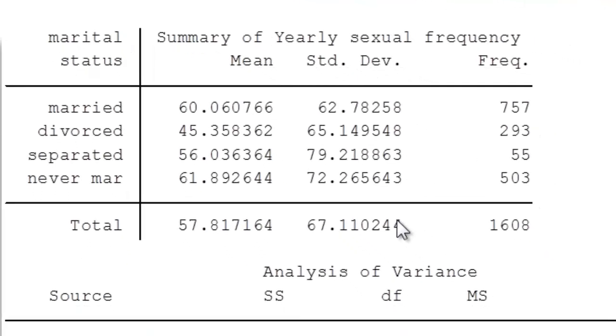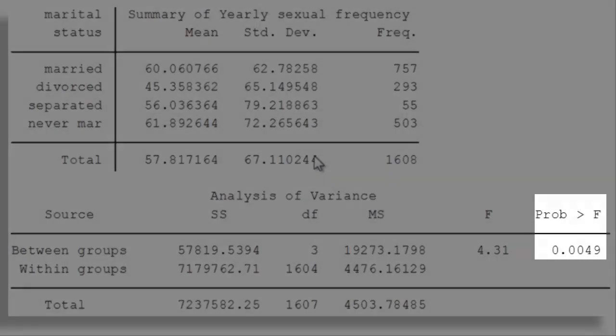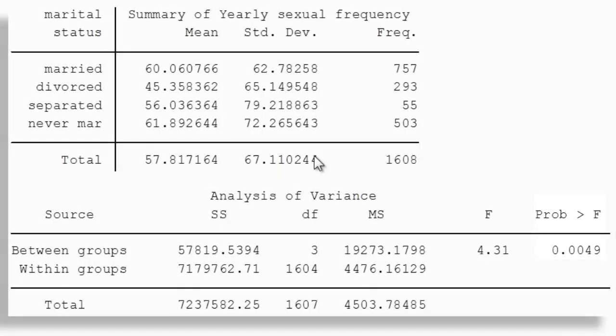The guts of the problem lies down below. You can see that there's a lot of numbers in this table. This is called an ANOVA table, and there's a lot of numbers in it. The number that's really most important initially is that one labeled probability PROB greater than F. We see here that the value is .0049. That number is the p-value that we discussed in the difference of two means problems.